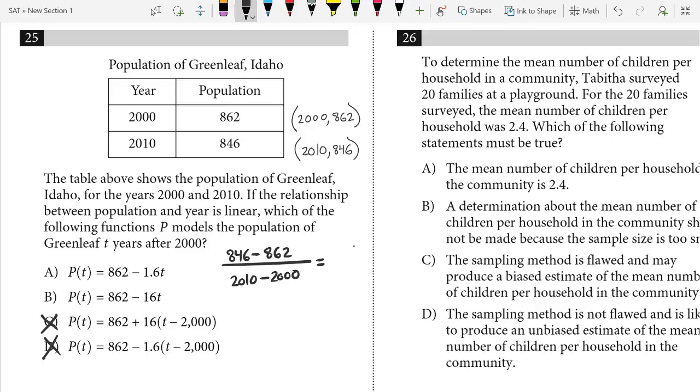Hey, and guess what? All we really need to do then is figure out what the slope is, right? Because both A and B have the same Y-intercept initial amount. So we've got to figure out what the slope is.